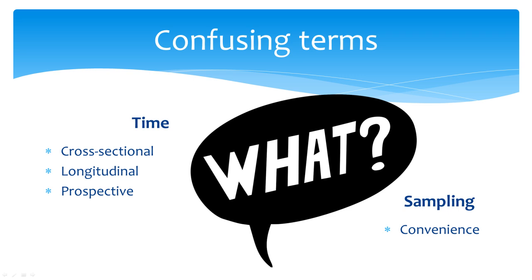If you use these words to describe your study design in the absence of one of the labels discussed in this video, you will not have given your teacher enough information to properly classify it. Other confusing terms often relate to the way samples were collected, like convenience sampling. Convenience sampling means that the sample was readily available or accessible to the researchers. This term will give you a hint that the study does not have a random sample and therefore is not a randomized controlled trial, but you still need to classify it further as descriptive non-experimental or quasi-experimental.